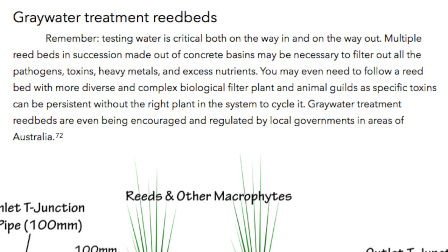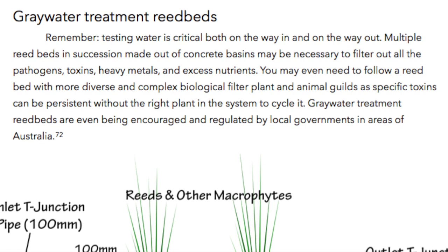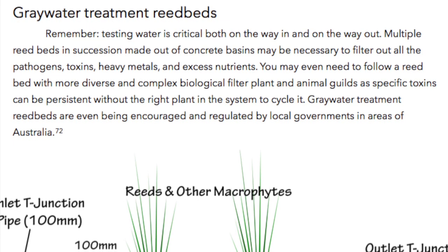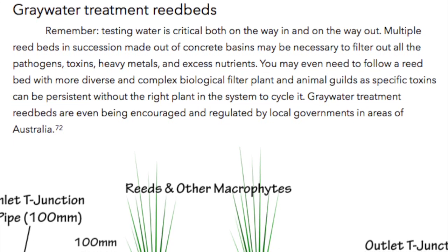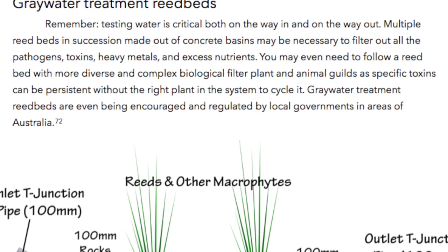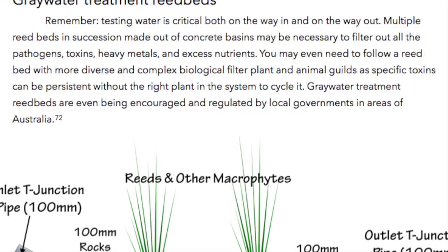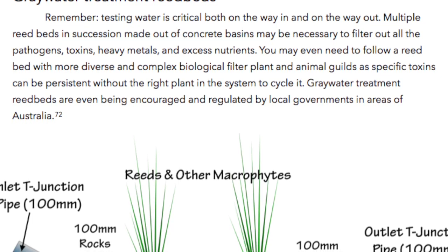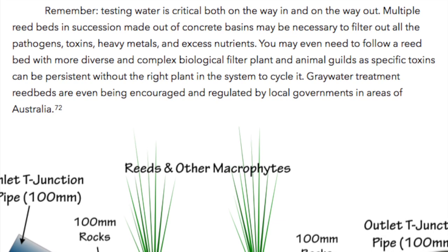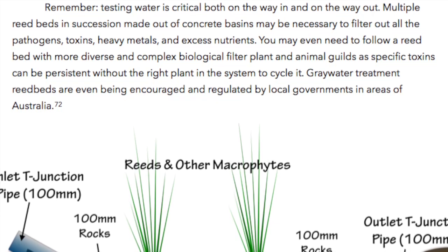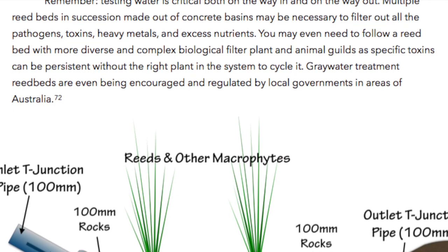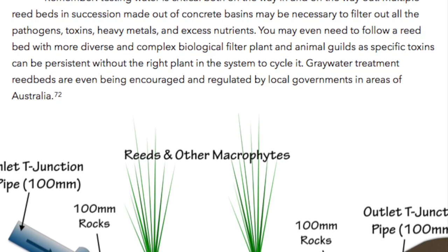Gray Water Treatment Beds. Remember, testing water is critical both on the way in and on the way out. Multiple reed beds in succession made out of concrete basins may be necessary to filter out all the pathogens, toxins, heavy metals, and excess nutrients. You may even need to follow a reed bed with more diverse and complex biological filter plants and animals, as specific toxins can be persistent without the right plant in the system to cycle it.